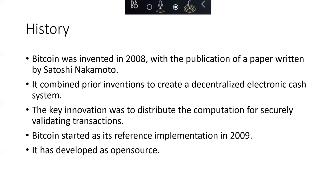Double spending is the equivalent of counterfeiting — you would use money you were allocated to do multiple things, essentially counterfeiting the money. That's a key problem any electronic cash system has to prevent. The double spend problem had been a weakness for all digital currencies prior to Bitcoin, and was typically dealt with by clearing transactions through a central clearinghouse.